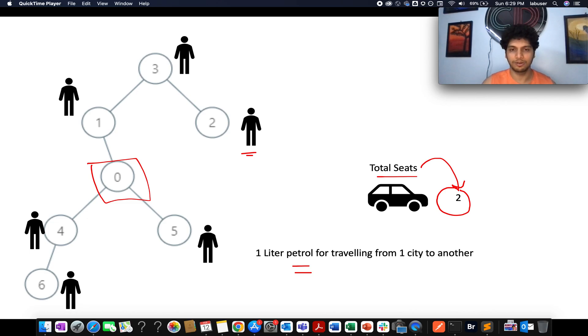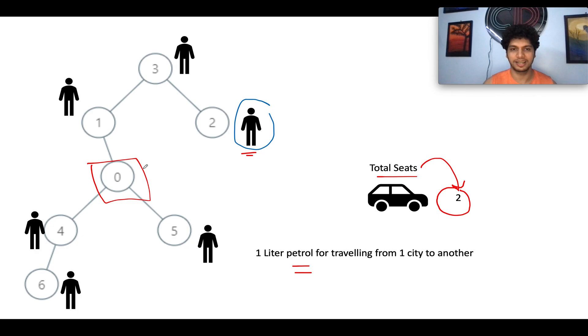Moving on, let's calculate the total liters of petrol or the total number of trips needed such that all these passengers reach to the 0th city. So let's get started from this particular node, which is the leaf node. And here this passenger would be traveling to the third city. This will cost him one road trip. So we have a car and one passenger would be traveling in it. So let's draw a car over here. The cost gets updated to one because we have consumed one liter of petrol.